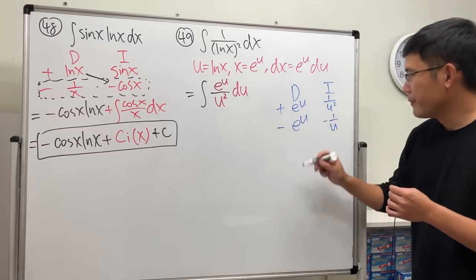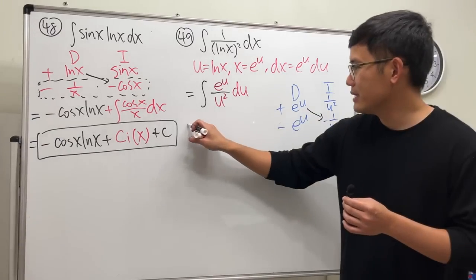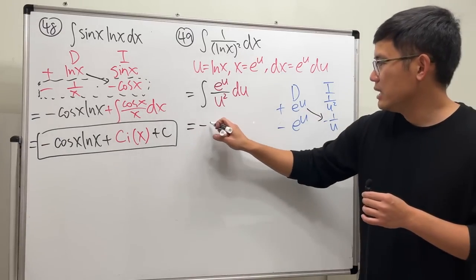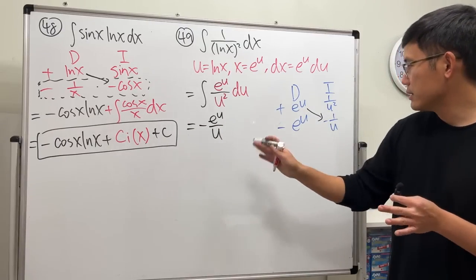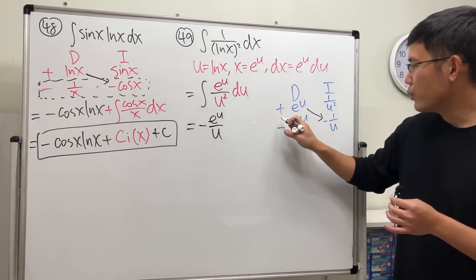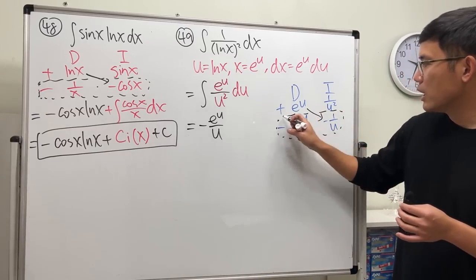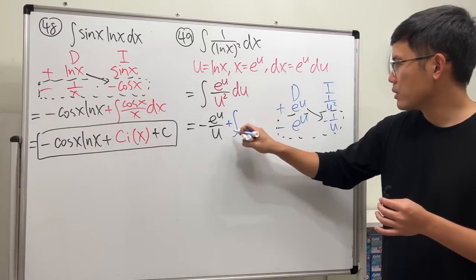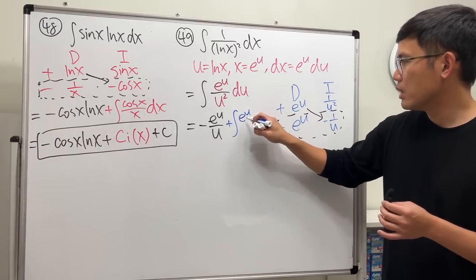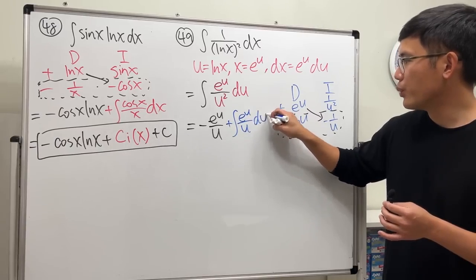This works because this times that I can handle. We get negative e to the u over u. No integral, right? So this is just that, but when I multiply this and that, I put itself an integral. So it's a positive integral, and then we have e to the u over u.